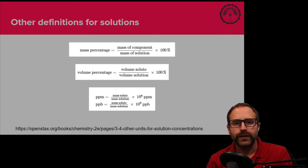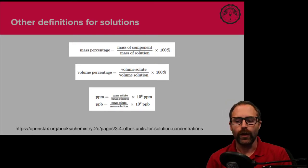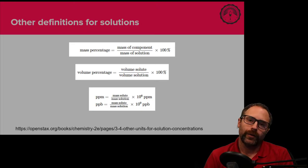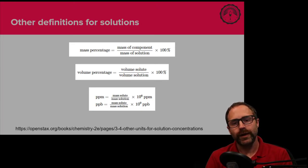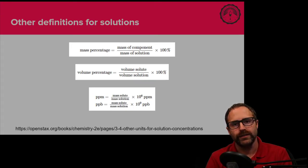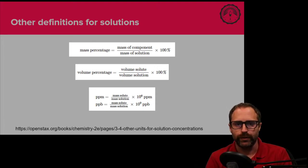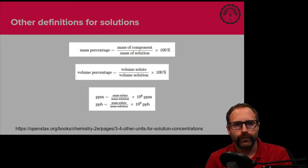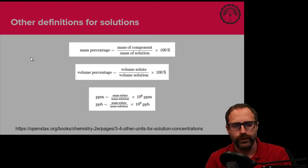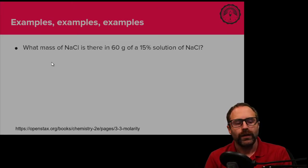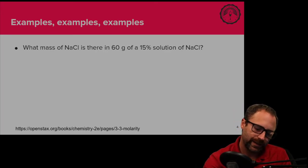Parts per million and parts per billion are terms you'll use especially when dealing with low concentrations. A lot of times pollutants are measured in parts per million or parts per billion to determine what the threshold level is deemed as safe or acceptable — not necessarily always the same thing. Parts per million and parts per billion are the definitions I really try to drive home with some examples.